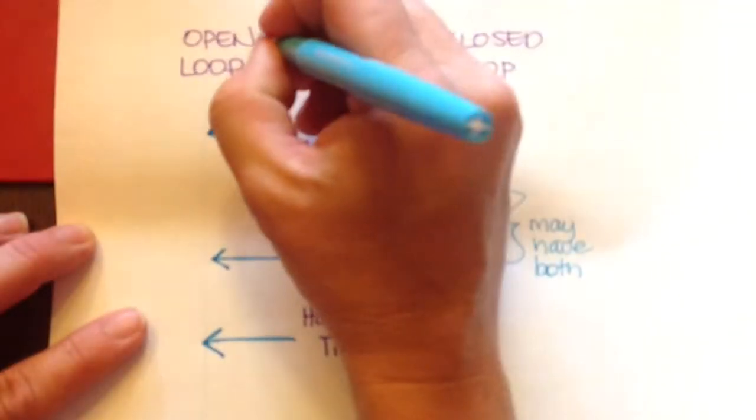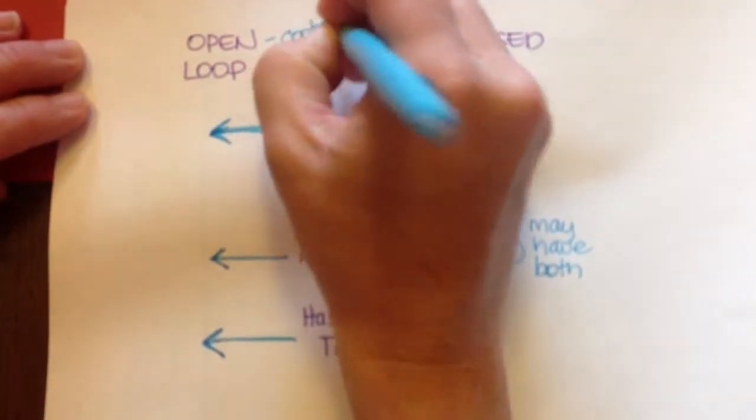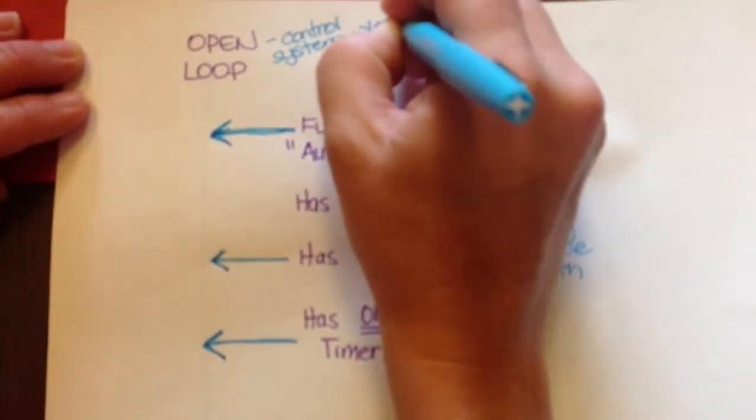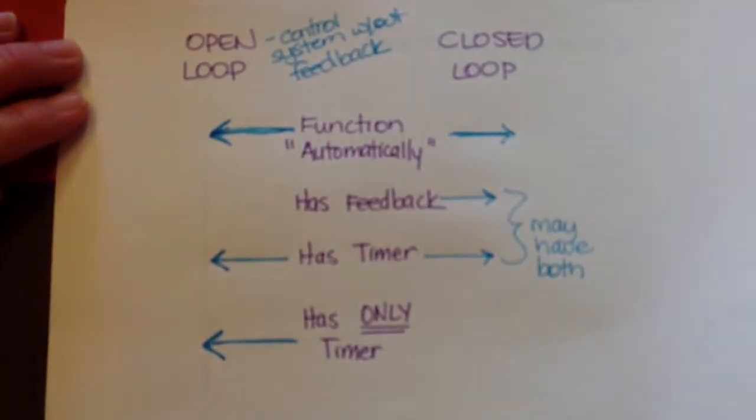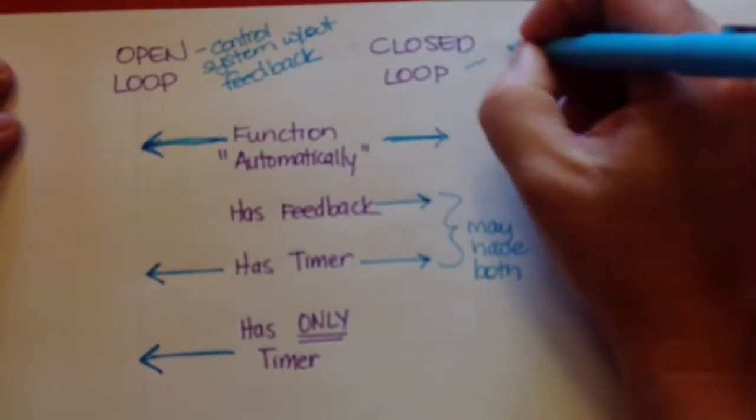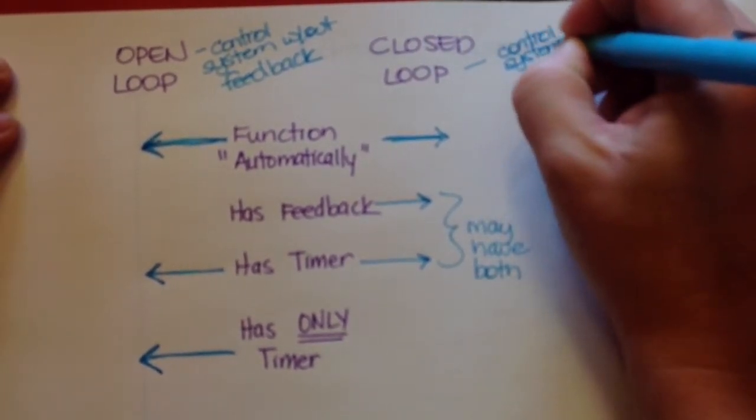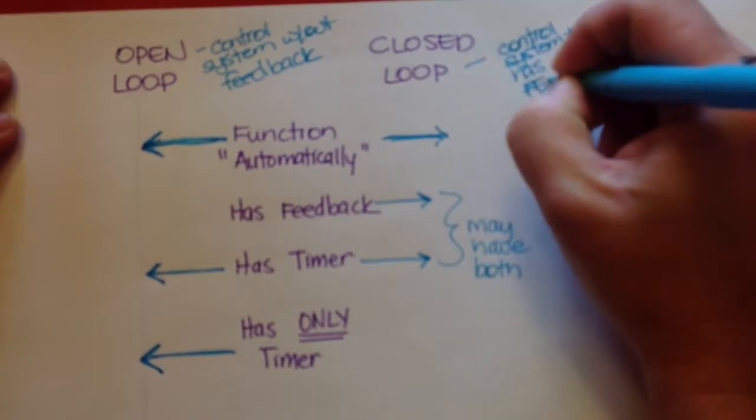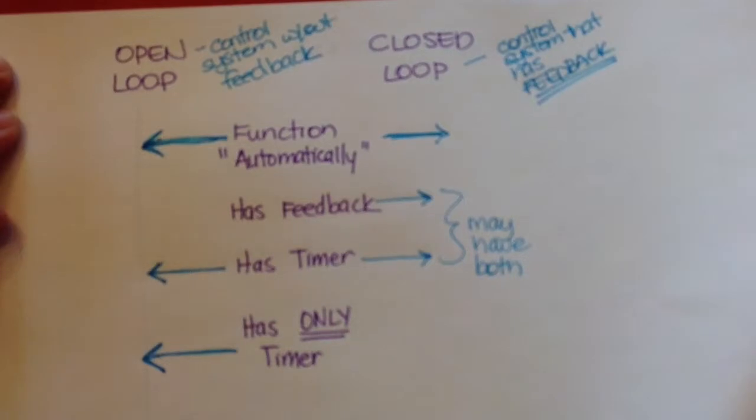So now let's look at really what the definition of this is. Open loop is a control system without feedback. And what is the case with closed loop? Closed loop is a control system that has feedback.